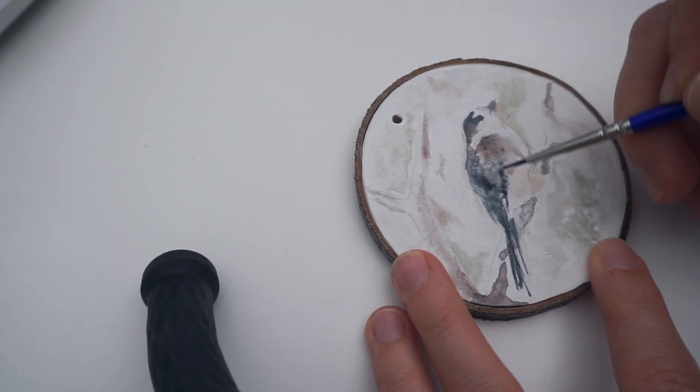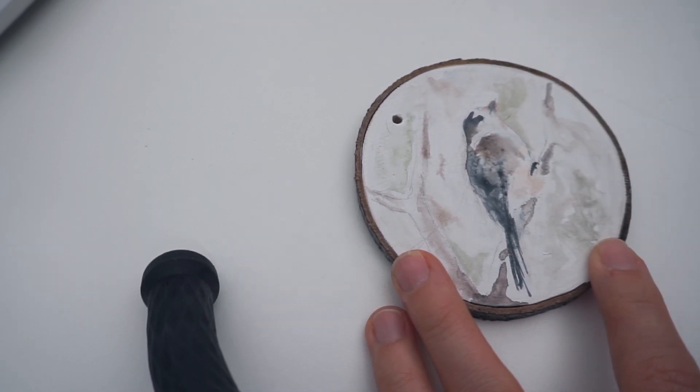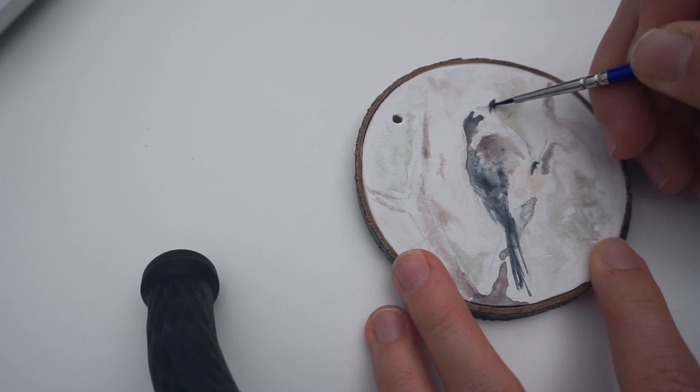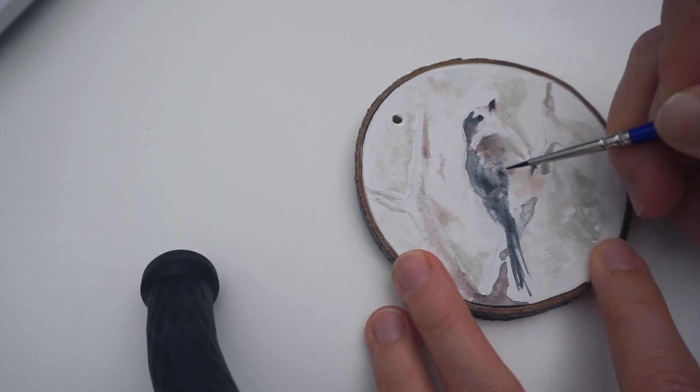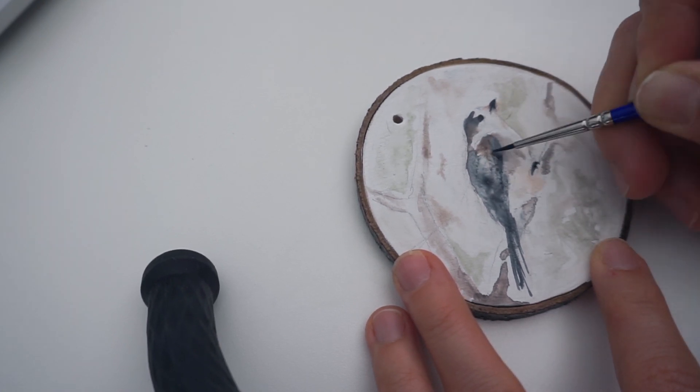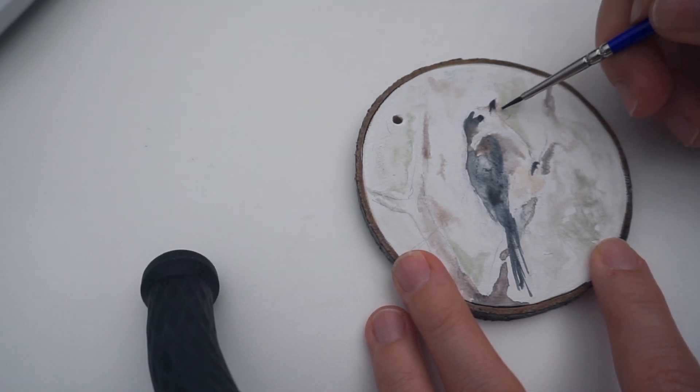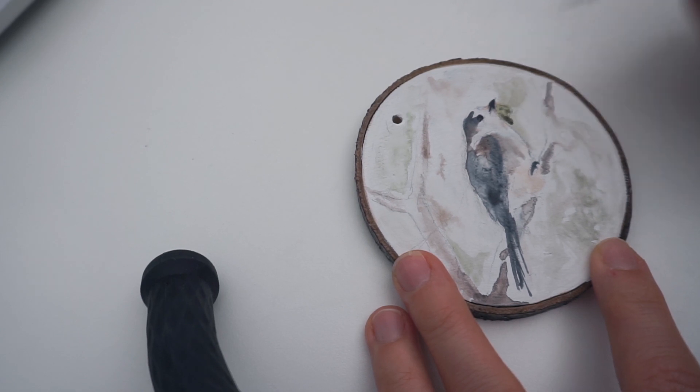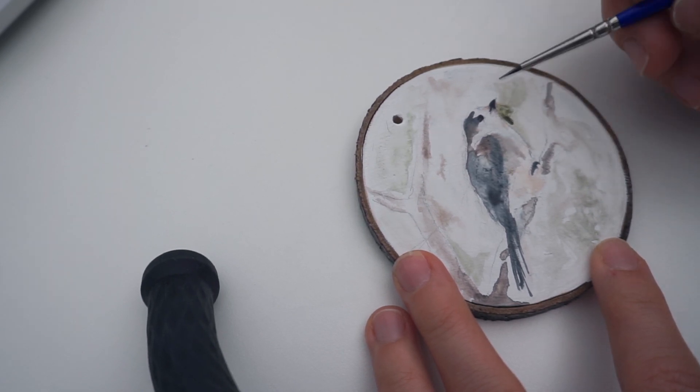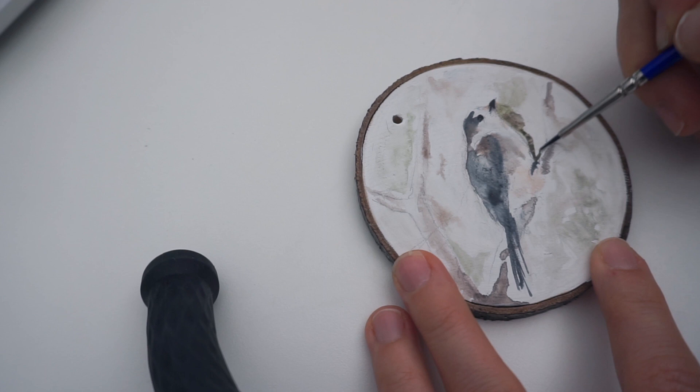Here I'm starting to add some details—his beak, his tail, his eye—just defining some elements. Then at the last layer I will add more details and just make sure everything is in the right position. Sometimes paint moves on surfaces like this, so I'll have to correct it a little bit at the end. But like I already said, it's easy to correct watercolors on watercolor ground.